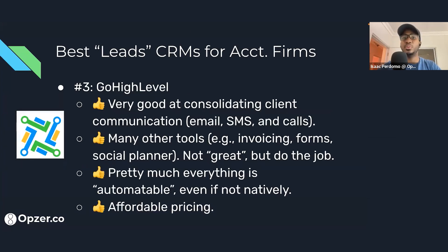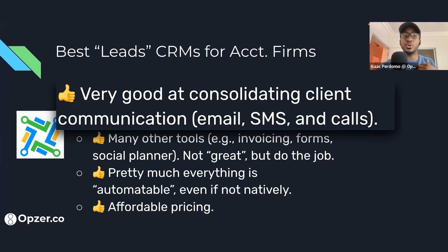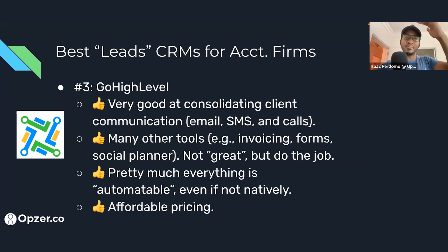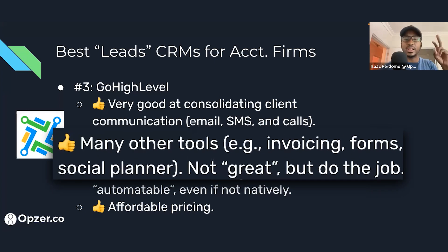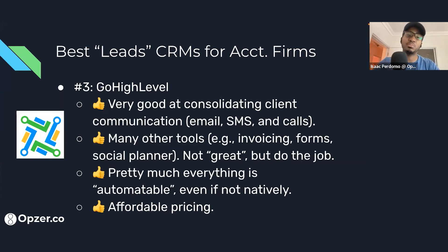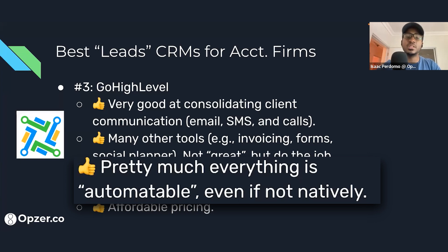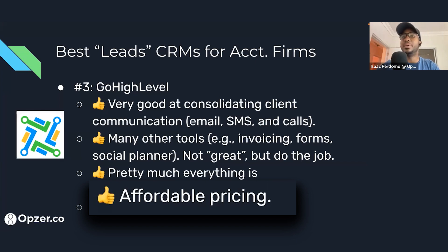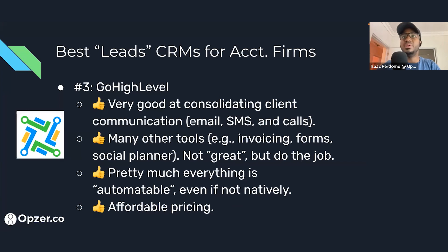Option number three is Go High Level, also called Lead Connector among other names — I'll explain why in a second. Overall, this is an extremely good platform if you want to consolidate client communication. If in your sales or client management process you use email, text messages, and calls, and you want to see everything in one single platform historically about that client, this is the one thing I think Go High Level does extremely well. It has many other tools — forms, social planners, invoices — and pretty much everything is automatable. There's a plan at $97 a month with unlimited contacts and unlimited emails, which is a value proposition very few other CRMs offer.